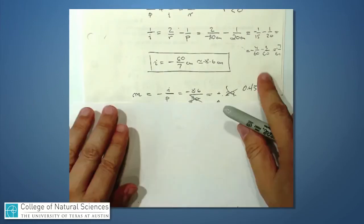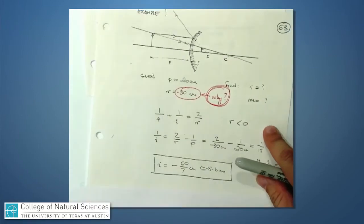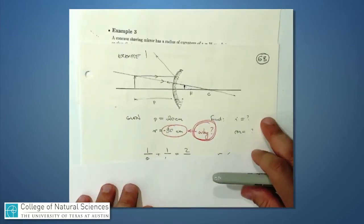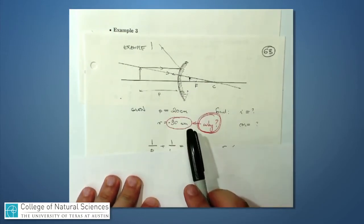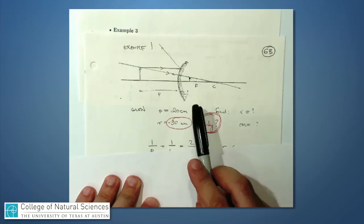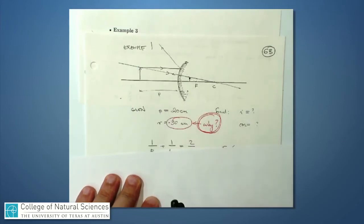In other words, it's an upright image. If I look back to my picture, it's in the same orientation as the object was. So it points up and it's not quite as big as the object, it's only 43% as big.